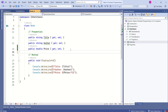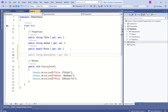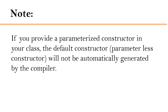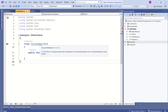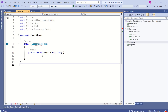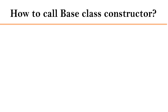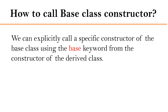Now I will add a parameterized constructor to the base class. If you provide a parameterized constructor in your class, the default constructor will not be automatically generated by the compiler. As soon as we add a constructor in the base class, we get an error in the FictionBook class because the compiler is expecting us to call the base class constructor and pass the parameters. So how do we call the base class constructor?